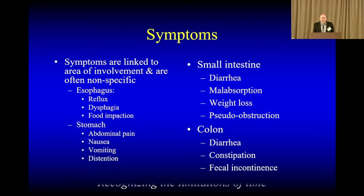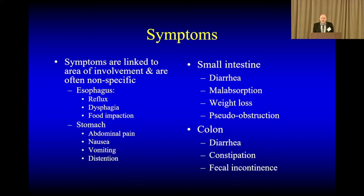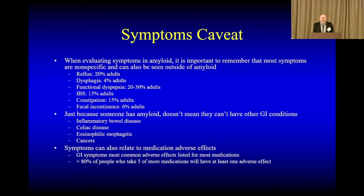The symptoms can really link to the area of involvement and are often nonspecific. With esophageal involvement, we'll see reflux and swallowing issues most often, occasionally food impaction. The stomach brings more abdominal pain and distension. Small bowel is often diarrhea and weight loss. And the colon, we can see both diarrhea and constipation. The big caveat is that most of these symptoms are nonspecific — there's often not a symptom you can look at and say this is definitely from the amyloid, as most of these symptoms are quite common in the general population.